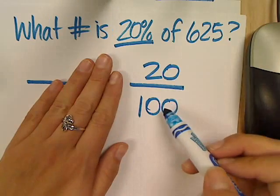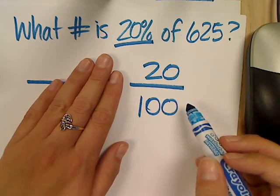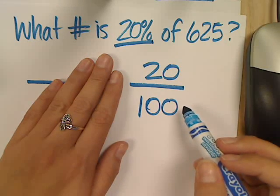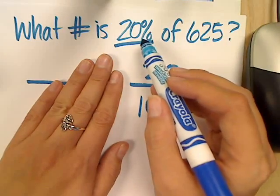Because isn't 20 over 100 the same as 20%? Yeah, because remember, percent is always out of 100. So 20 out of 100 is 20%.